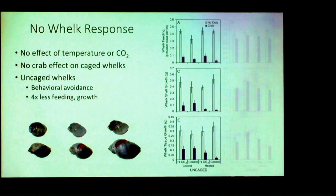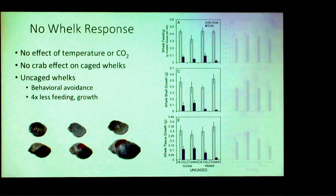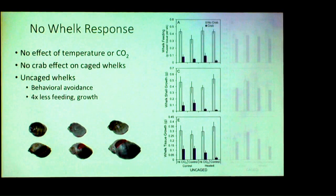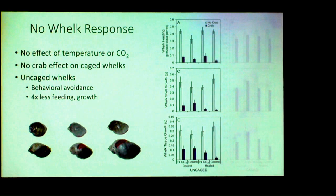Whelk feeding was over four-fold lower when crabs were present, with a huge decrease in shell growth and tissue growth — they really weren't doing much except hanging out on the side of the tank lid. This is a massive behavioral avoidance that has not been previously documented. When they're avoiding crabs, they're delaying growth and reproduction, or just growing a lot slower in environments with crabs. Over the course of 10 weeks, we were seeing really large amounts of lateral shell growth with nail polish markers. If there were effects of acidification or temperature, we'd really see them, but that wasn't the case.